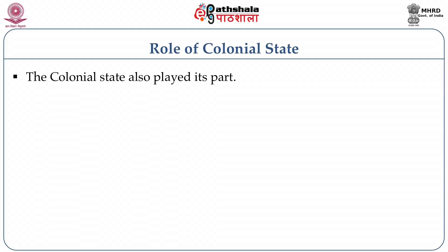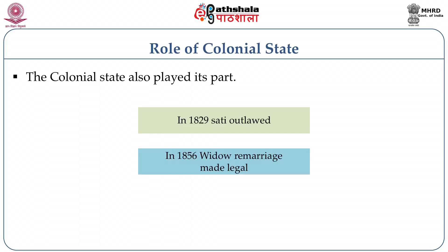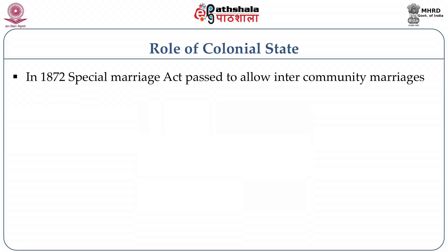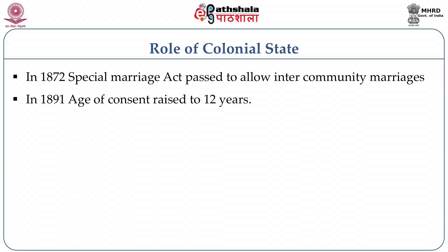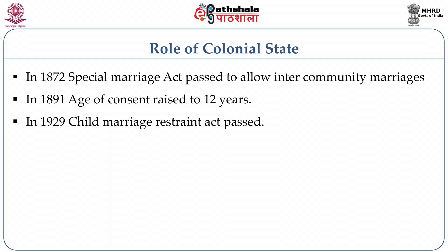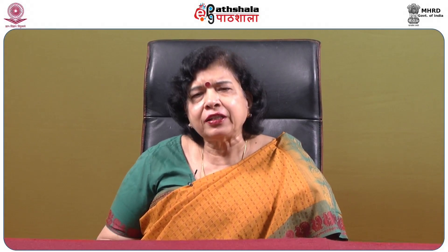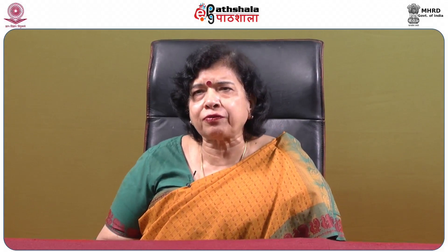The colonial state passed various laws: sati was outlawed in 1829, widow remarriage was made legal in 1856, female infanticide was banned in 1875, the Special Marriage Act to allow inter-community marriages was passed in 1872, in 1891 the age of consent was raised to 12 years, in 1929 the Child Marriage Restraint Act was passed, and in 1937 women got a limited right to property. There were so many reforms taken up for the upliftment of women.